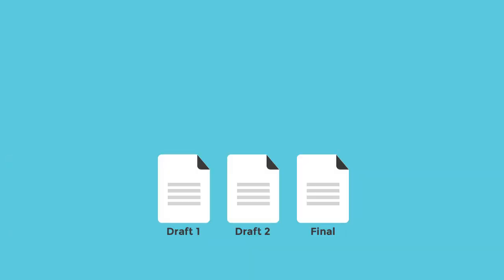A basic example of version control is when you save multiple versions of a file as you work with others. Let's say you're writing an essay in a Microsoft Word document. You save each version of your work, like draft one, draft two, and final. As you're working, you have a friend review your work and they save their revisions in another file, like draft two edits.